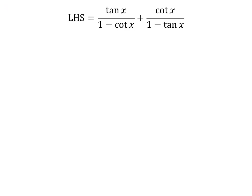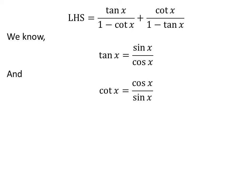The left hand side of the identity is equal to tangent of x upon 1 minus cotangent of x, plus cotangent of x upon 1 minus tangent of x. We know tangent of x is equal to sin of x upon cosine of x, and cotangent of x is equal to cosine of x upon sin of x.